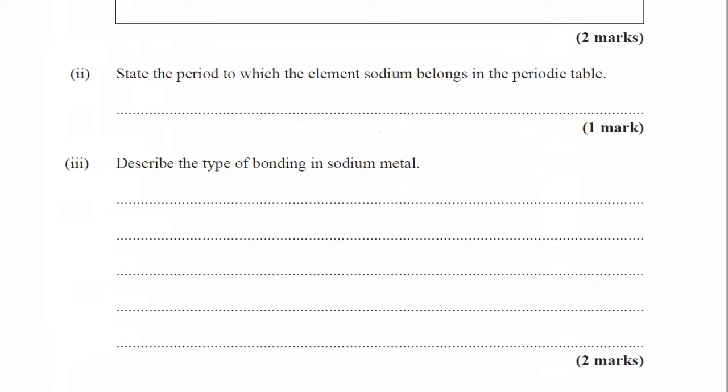Part two of B. State the period to which the element sodium belongs in the periodic table. So, we just mentioned two, eight, one. So, that means we have three electron shells. So, it means it would be in period three.